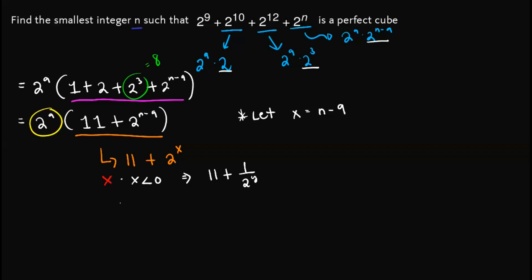Now, if you consider x equals 0, then the expression will become 11 + 2^0, which is equal to 11 + 1, which is equal to 12, which we know to be not a perfect cube since this one factors into 2^2 times 3. So there is no perfect cube out here.